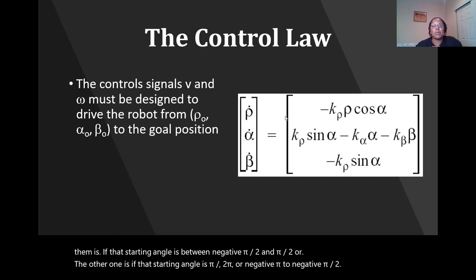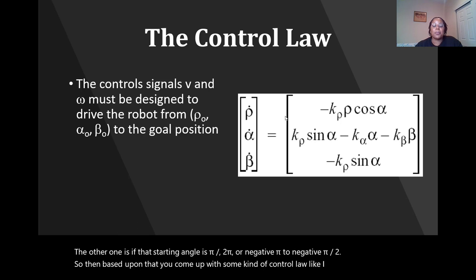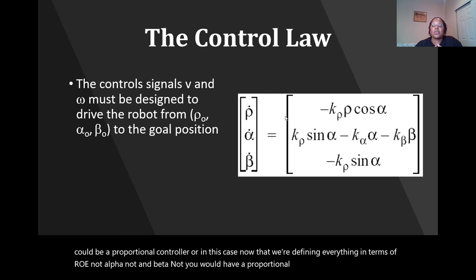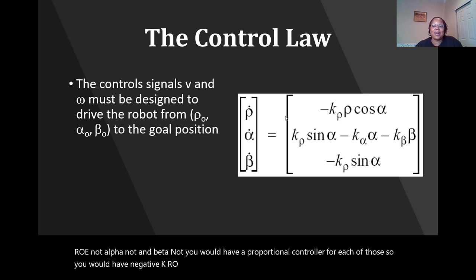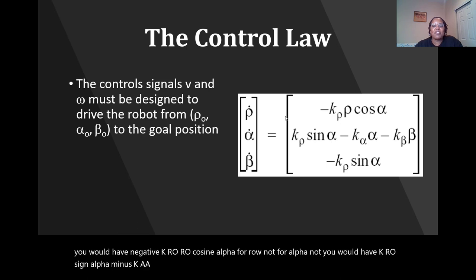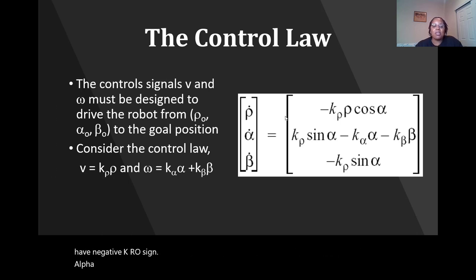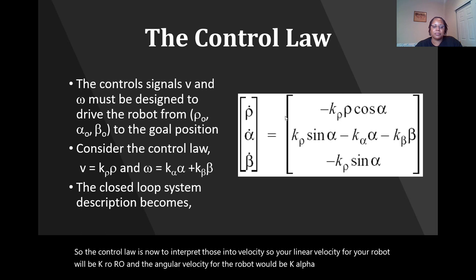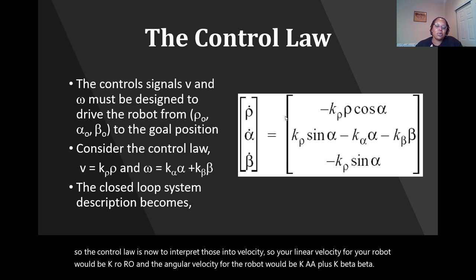Based on that, you define a control law. Defining everything in terms of rho-naught, alpha-naught, and beta-naught, you have a proportional controller for each: for rho-naught it's negative k-rho times rho times cosine alpha; for alpha-naught it's k-rho times sine alpha minus k-alpha times alpha minus k-beta times beta; and for beta-naught it's negative k-rho times sine alpha. The control law translates these into velocity: linear velocity equals k-rho times rho, and angular velocity equals k-alpha times alpha plus k-beta times beta.